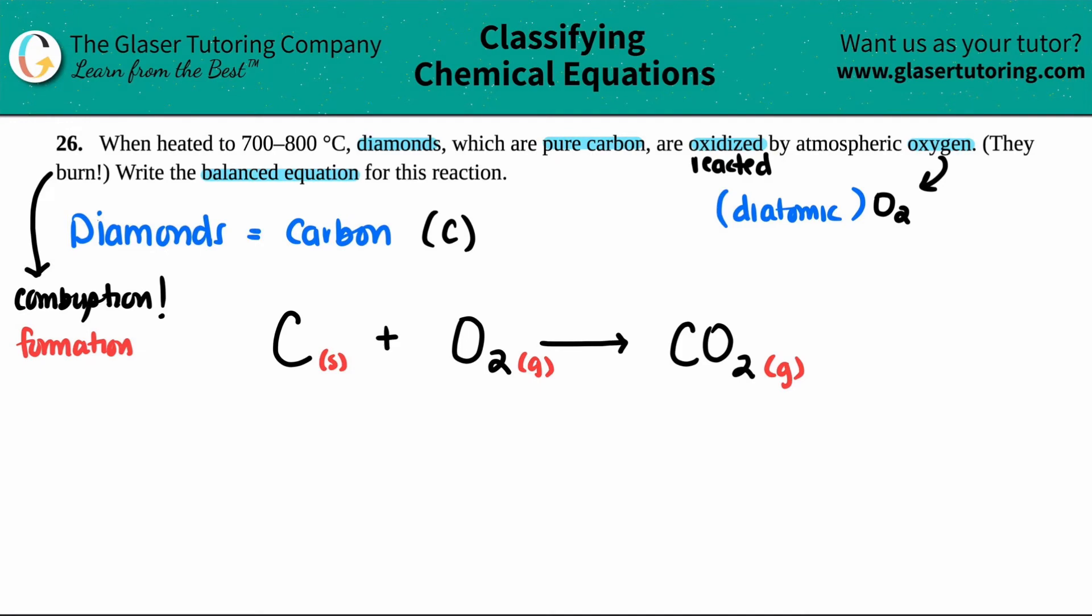And now just make sure if you balance the equation, but it's already balanced. I have one carbon, I got one carbon, I got two oxygens, I got two oxygens. So this is the answer, my friends. That's it.